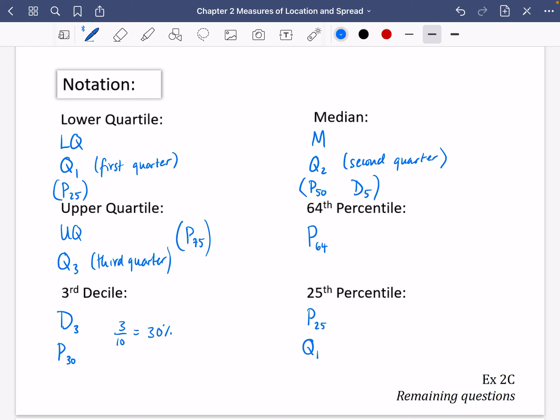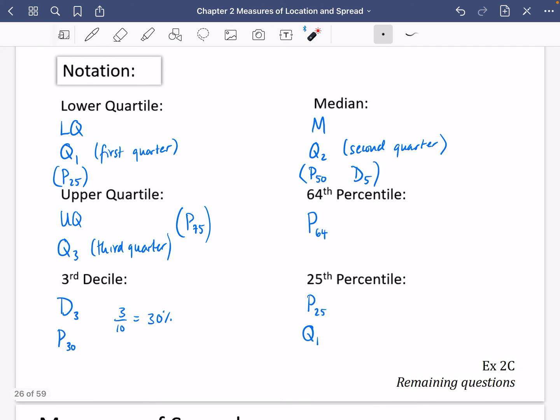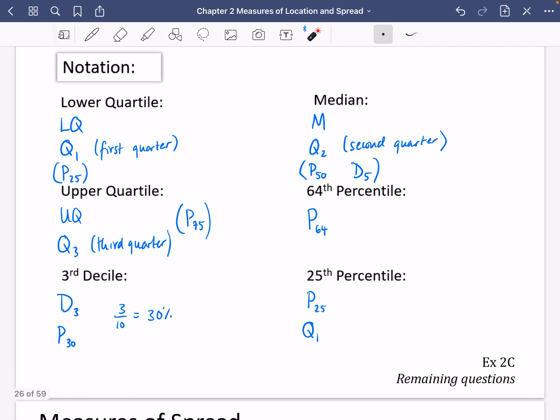It's just about being aware of all of these different things, so that if you ever see this notation you know exactly what you need to do. What I think you should try now is to go back to exercise 2C and try the remaining questions that are there. Some of them are about the median. You can go back and do the ones to do with the lower quartile, upper quartile, deciles, and percentiles.